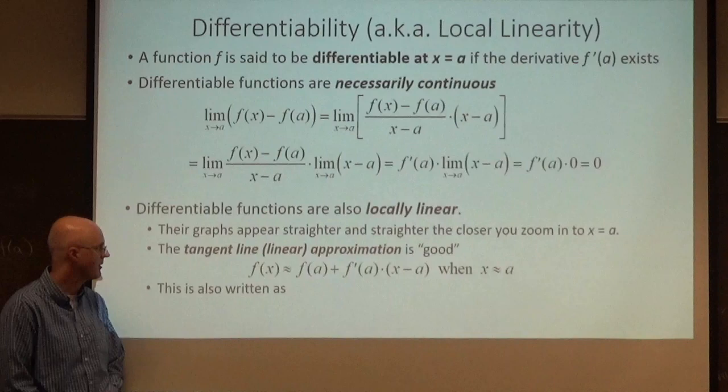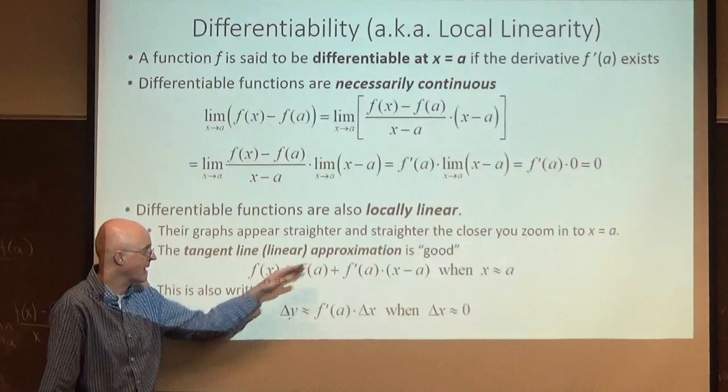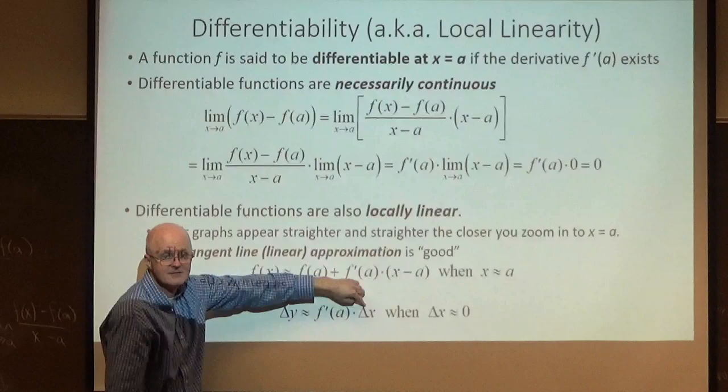Another way to rewrite this approximation is this one. Essentially, you get from here to here, just subtract f(a) from both sides. f(x) minus f(a) is the change of y. And on the right side, you'd be left with that. And x minus a is the same as h or delta x.